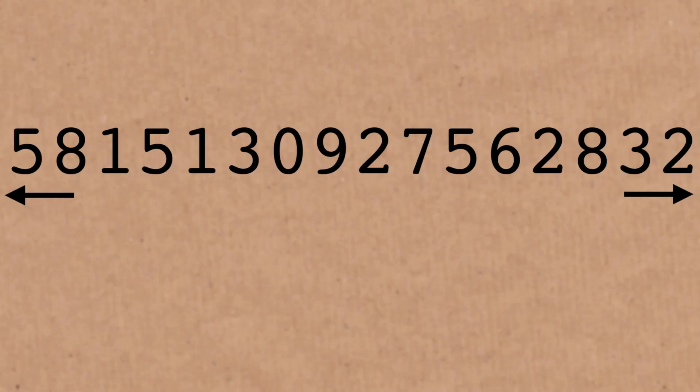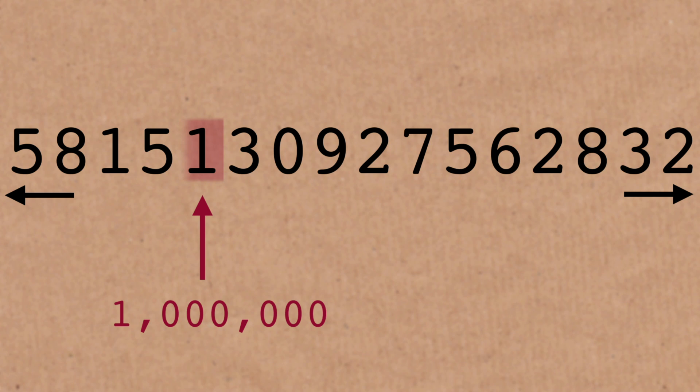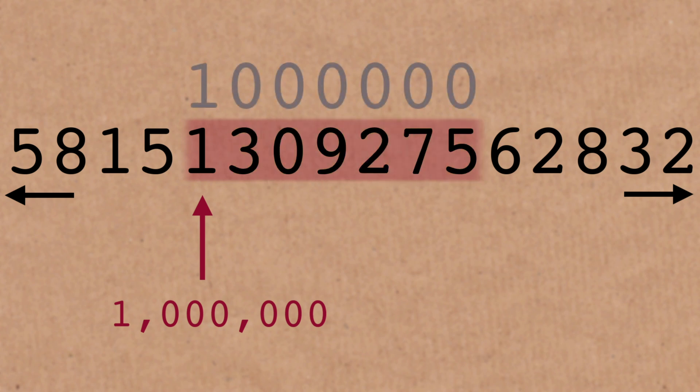And then when you get to 2-digit, 3-digit, 4-digit positions, you have several requirements that need to happen in a row, so your probability gets smaller. So for position 1 million, you would need position 1 million to be a 1 and then the next six positions after that to all be 0. That's very, very unlikely compared to just having, say, a 7 at position 7.